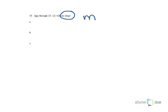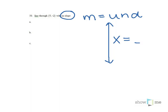In number 50, we're asked to find the equation of the line that goes through 5, negative 2, with no slope. That means the slope is undefined. The only kind of line that has a slope that's undefined is a vertical line. And the equation of a vertical line is going to be x equals a number.